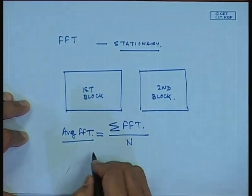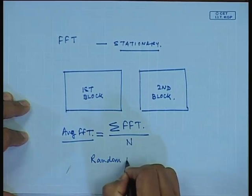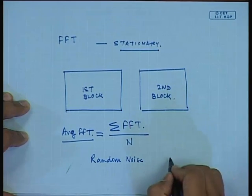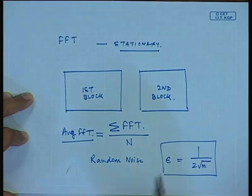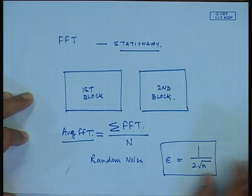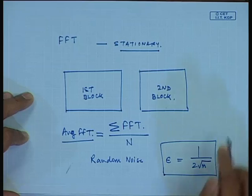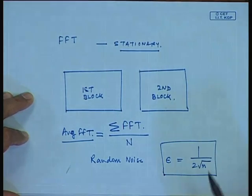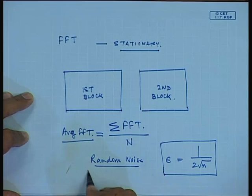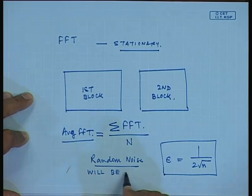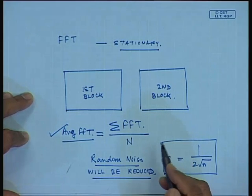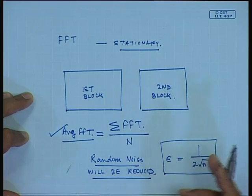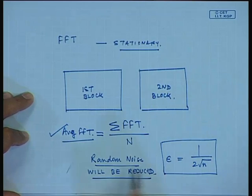The reason we do this averaging is to reduce random noise. This random noise error will actually reduce by an equation where n is the number of averages. This equation comes from probability theory. It suffices to say that once we are doing the FFT of a stationary signal, if we increase the number of averages, the random noise will be reduced. Averaging helps us to improve the signal characteristics while doing an FFT by removing the random noise.